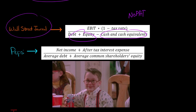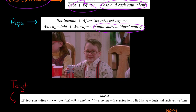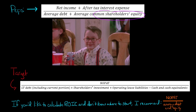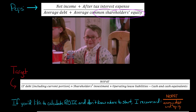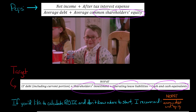PepsiCo also calculates return on invested capital and discloses their formula in their 10-K. For their profit measure in the numerator, they take net income and add the after-tax interest expense. For invested capital in the denominator, they use average debt and average common shareholders' equity. Target, the retailer, had a more complicated formula: in the numerator they used NOPAT, and in the denominator they included long-term debt (both current and non-current portions), shareholders' investment, plus operating lease liabilities, then subtracted cash and cash equivalents.